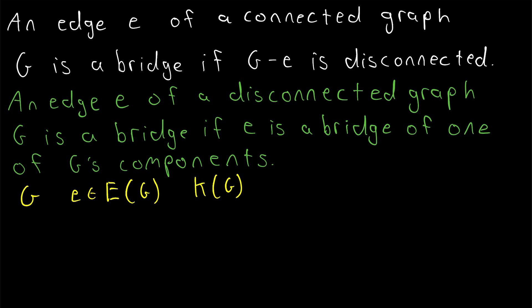We sometimes write K(G) to denote the number of components in the graph. So if G is connected, for example, then K(G) equals one. An edge E of the graph G is a bridge of G if K(G) equals K(G-E) minus one.